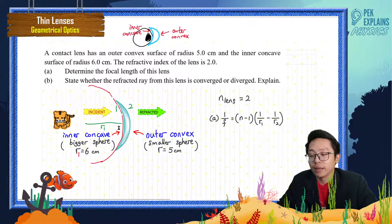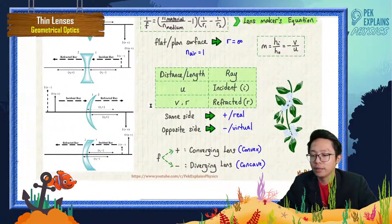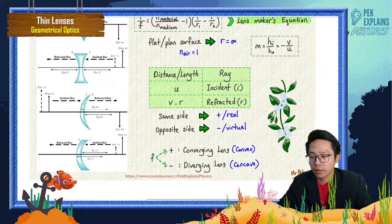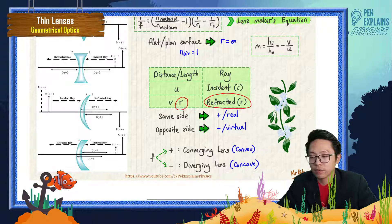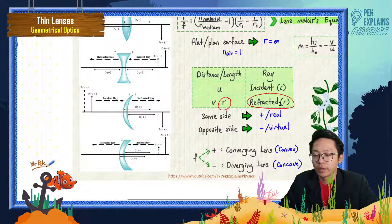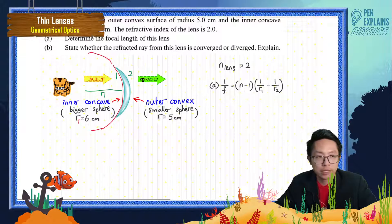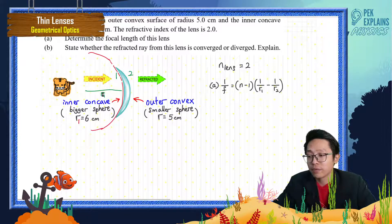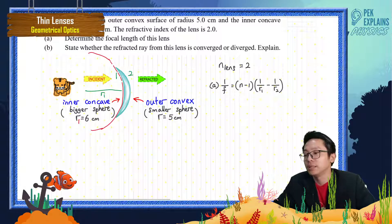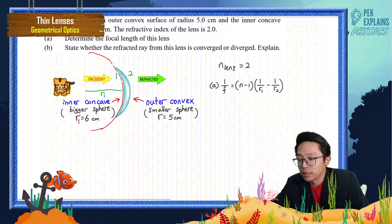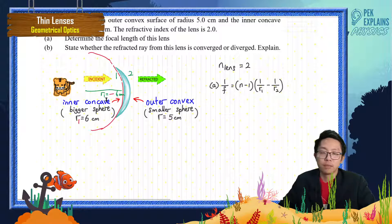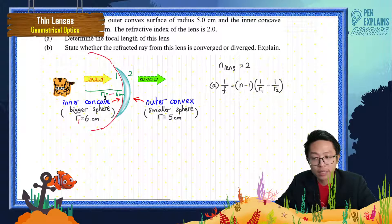Now, where is R1? The sphere of the first surface (the inner concave, 6 cm) is located to the left. The radius R1 is on the left-hand side. Since the refracted ray is on the right, and R1 is on the left, they are on opposite sides. Opposite side means R1 is negative — so R1 is negative 6 cm.